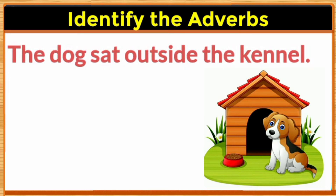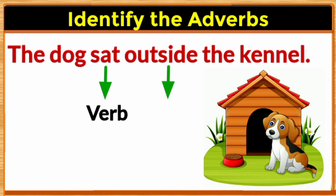The dog sat outside the kennel. In this sentence, the word sat shows us the action done by the dog — it is a verb. The word outside tells us more about the verb; it tells us where the action took place.